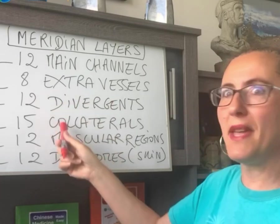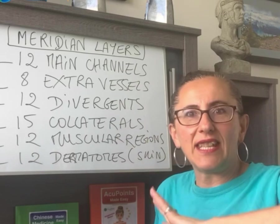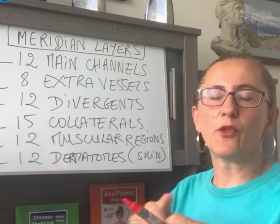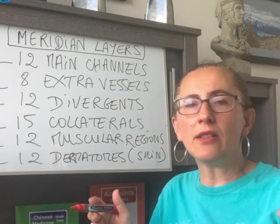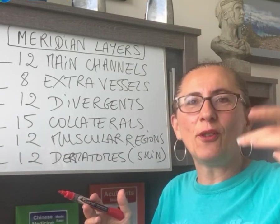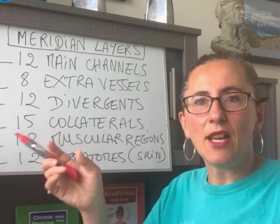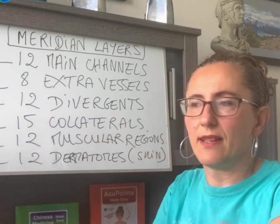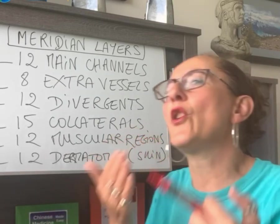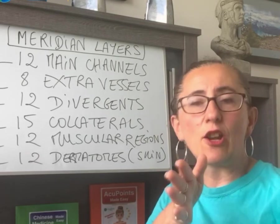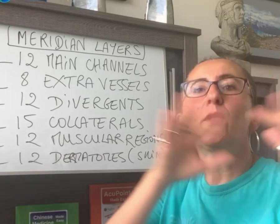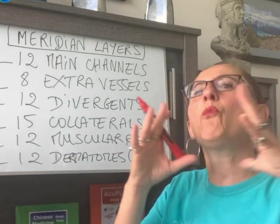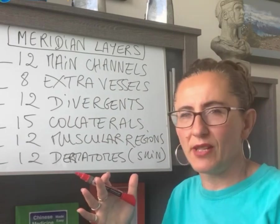In the middle layers we have the 12 divergences and the 15 collaterals. The 12 divergences diverge from the main meridian, and their function is to connect the internal and external parts of the body and extend the pathway of the 12 main meridians. For example, the large intestine has a divergence that diverges from the shoulder, extending the large intestine's pathway to cover more area. Divergences cover an extensive path all around the main meridian pathway.